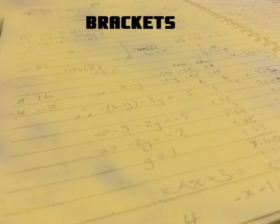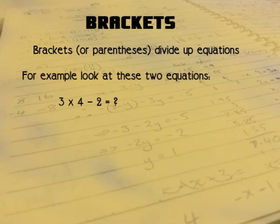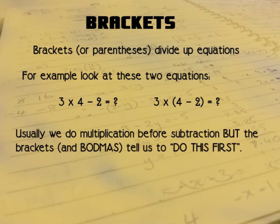So let's look at the first thing on the BODMAS list: brackets, or parentheses as they're sometimes called, divide up equations. For example, here are two equations. One of them has a bracket in it, otherwise they look very similar: 3 multiplied by 4 minus 2. So usually we would do multiplication before subtraction, but the brackets tell us to do this first. On the left hand side, 3 times 4 minus 2 equals 10—so 3 times 4 is 12, then 12 minus 2 is 10. But on the right hand side, first we must do the brackets, so we do 4 minus 2, that is 2, and then we do 3 times 2 which is 6. So we end up with two different answers just because of the brackets we put into that equation.